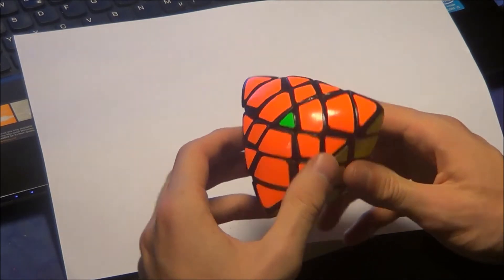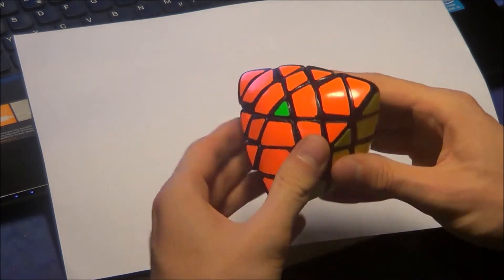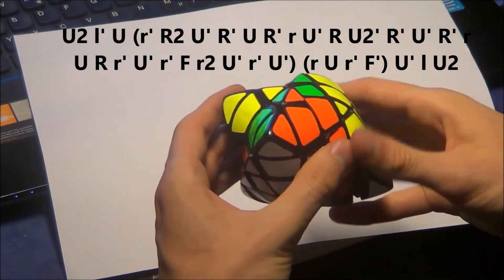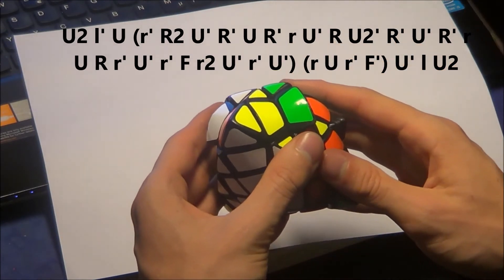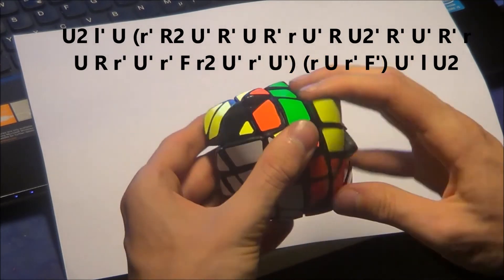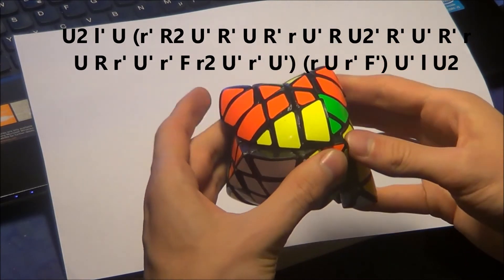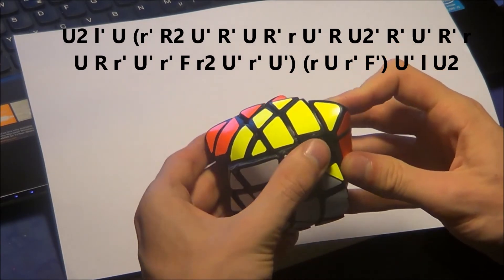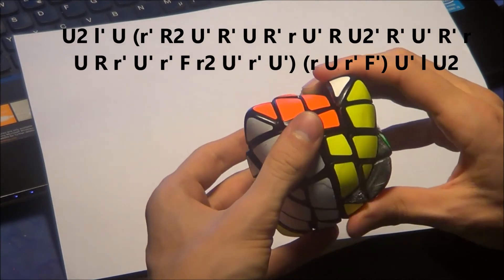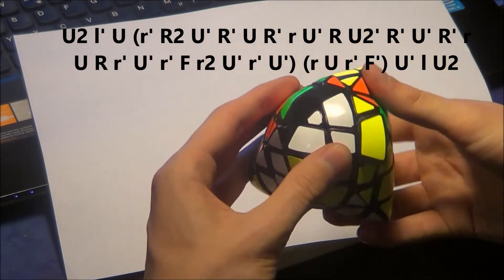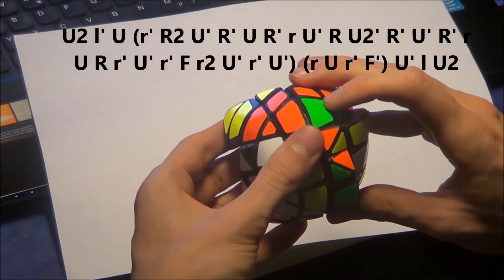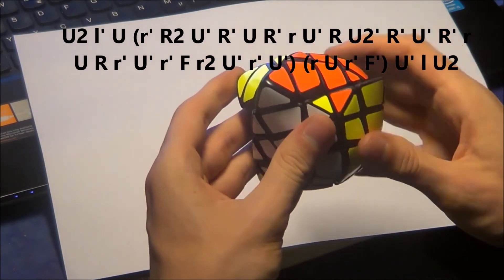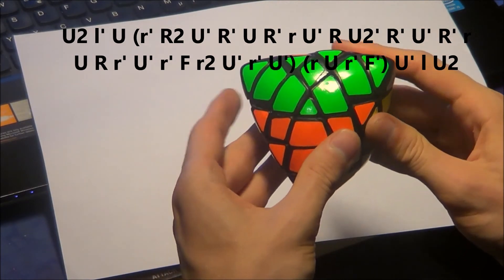And the parity to switch these two centers here goes like this: up 2, L inverted, up, right, R2, up inverted, right inverted, up, right inverted, right, up, right inverted, right inverted, up inverted, right inverted, right inverted, front, R2, up inverted, right inverted, up inverted, right, up, right inverted, front, up inverted, L, up 2.